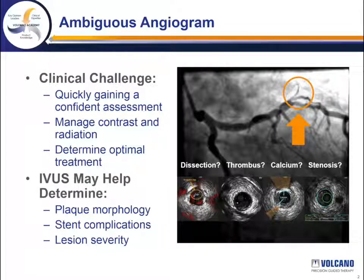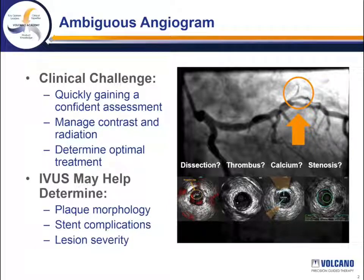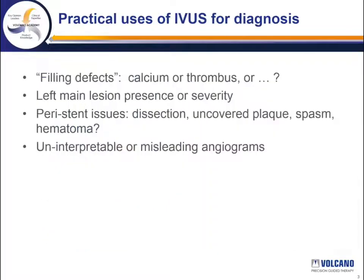In this regard, IVUS may help determine the plaque morphology, stent complications, or in some cases the lesion severity. In my experience, there are a number of practical uses of IVUS for diagnosis in these types of ambiguous angiograms.